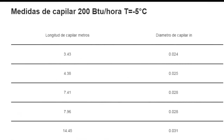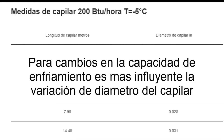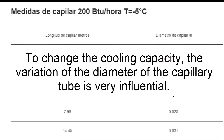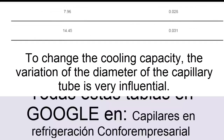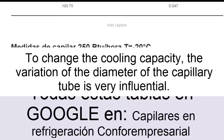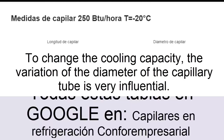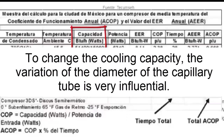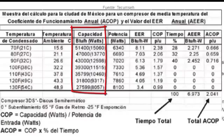When it is necessary to switch to a very different cooling capacity, the change in diameter can be more useful than a change in capillary length. At this time we must mention that the best way to select a capillary is not with the electrical power or horsepower, but with the cooling capacity of the compressor. Compressor cooling capacity is the amount of heat that equipment running a given compressor can extract, usually measured in kilocalories per hour, BTU per hour, or watts.